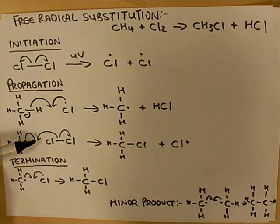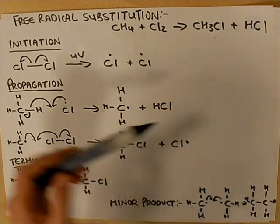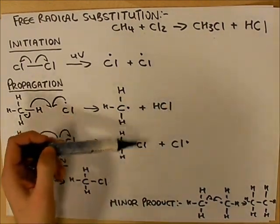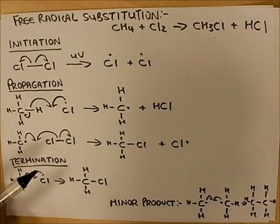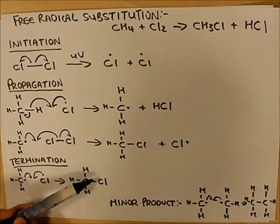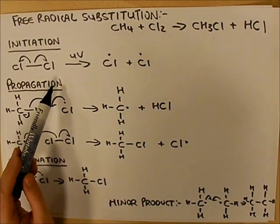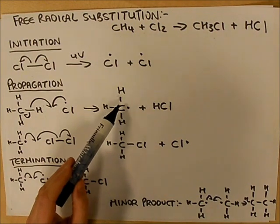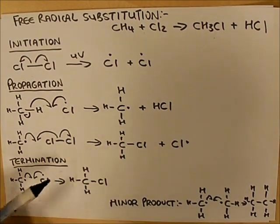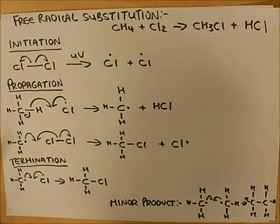Little things to remember: our two products that were formed here, chloromethane and HCl, we showed the formation of both of these in our propagation step, and we showed the formation of the chloromethane here as well in our termination step. Initiation forms two free radicals. Propagation steps each produce one free radical, whereas a termination step produces no free radicals at all.